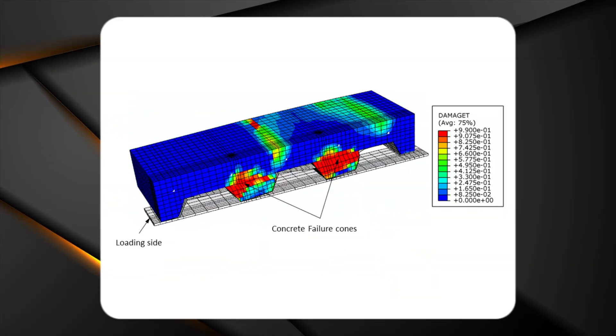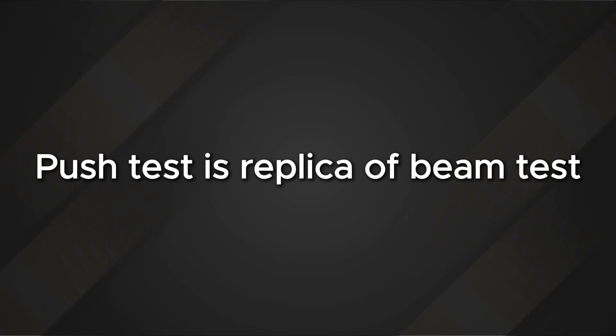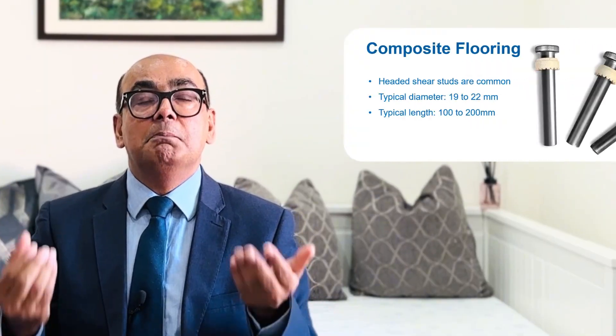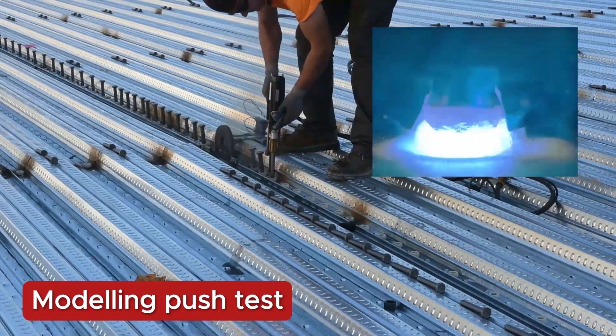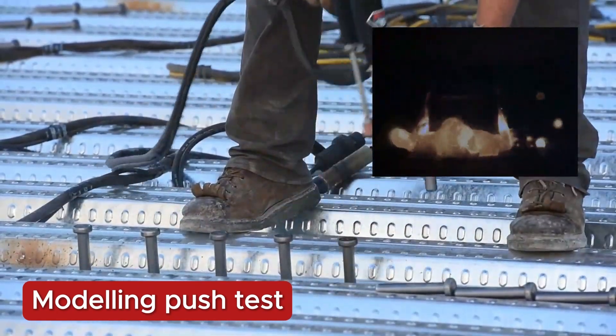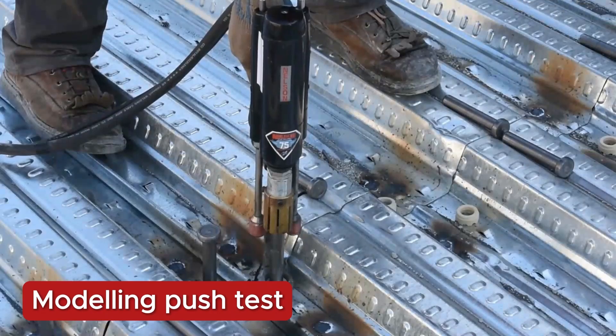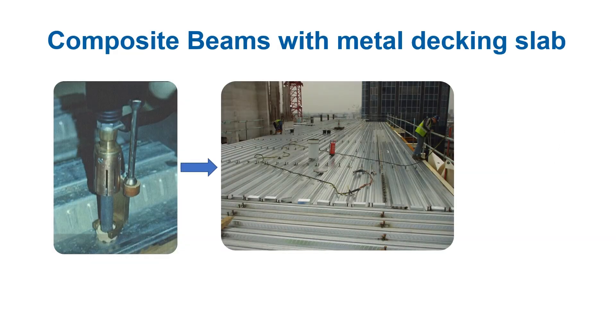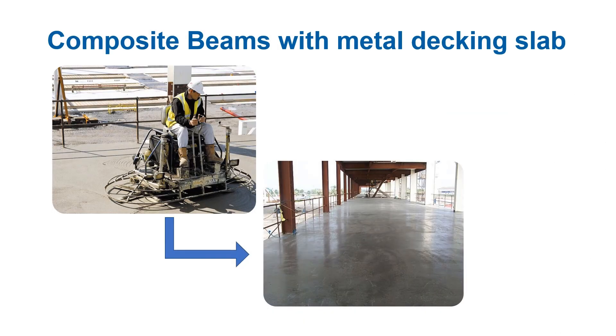What is a push test? A push test is a replica of a beam, and we use it to determine the shear resistance of shear connectors. Shear connectors are metal fixings that we weld at the top of the steel beam, and on top of that we pour the concrete. Underneath we have the steel deck; in combination it provides a composite structure which is lighter than ordinary steel or concrete structure on its own.